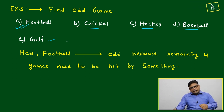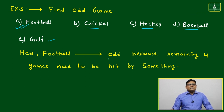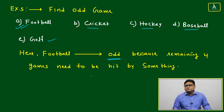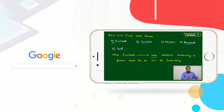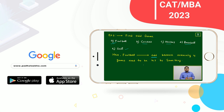Football is the odd one out because it is not hit by any instrument — it is hit directly by a person through the leg or foot. The remaining four games need some accessory or instrument to hit or play, but football doesn't need anything extra; it only needs you.